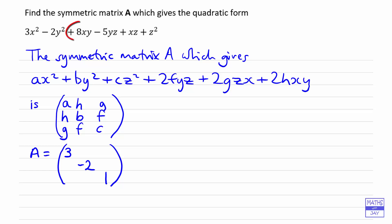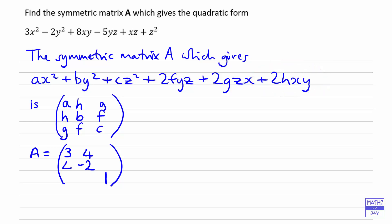Looking at xy, we've got an 8 in front of xy, corresponding to 2h, so h is half of 8, which is 4. That goes in the two xy positions. For xz, g is half the coefficient of xz, so half of 1 is a half — that goes in both xz positions. Finally, we're halving negative 5, giving negative 5/2, which goes in both yz positions.